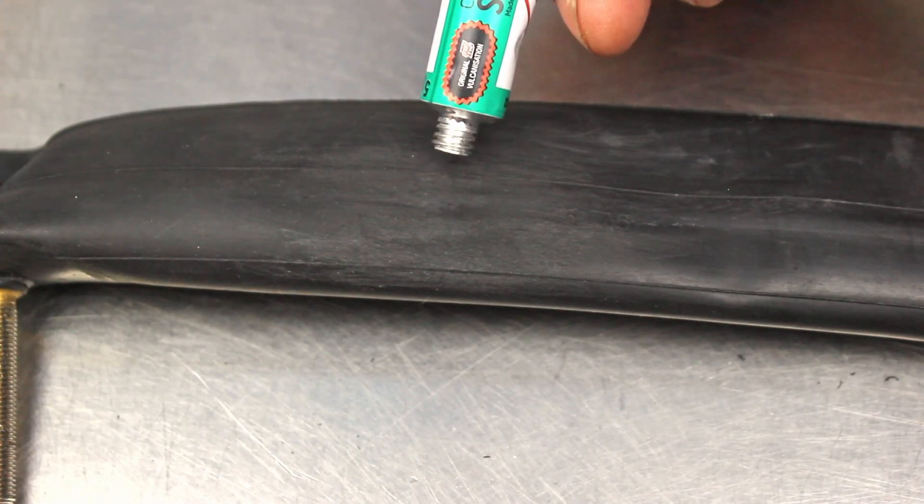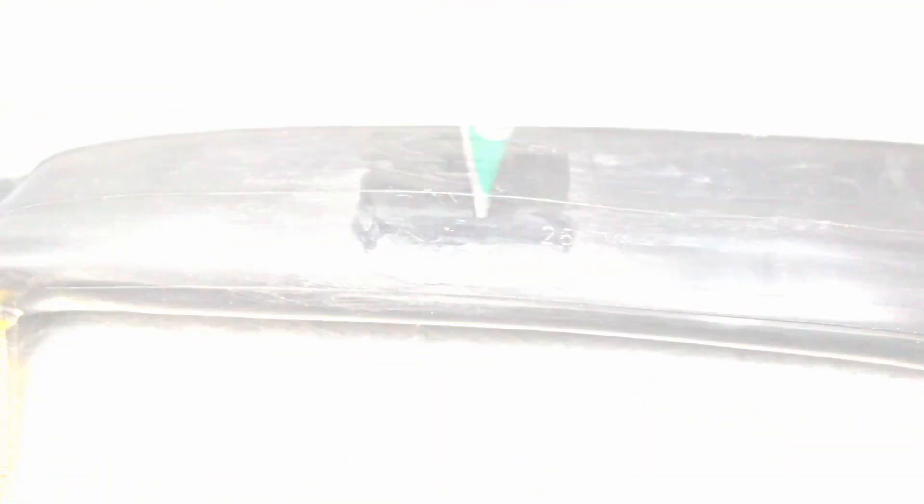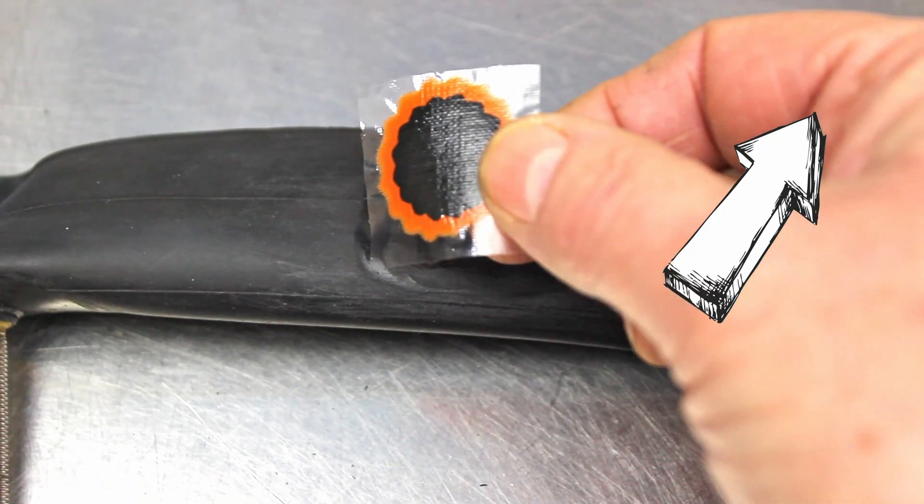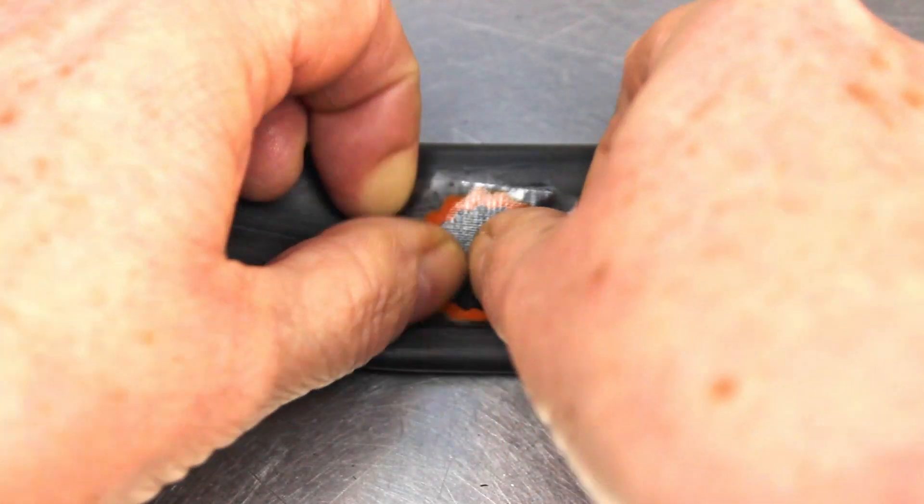If the air still escapes somewhere then you may have a hole somewhere in the inner tube. I have a great video for you here if you need help with repairing a puncture. You can also find a link to this video in the description below.